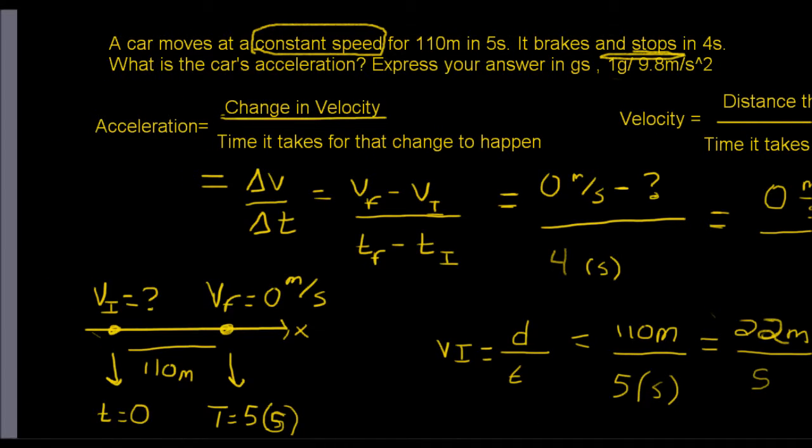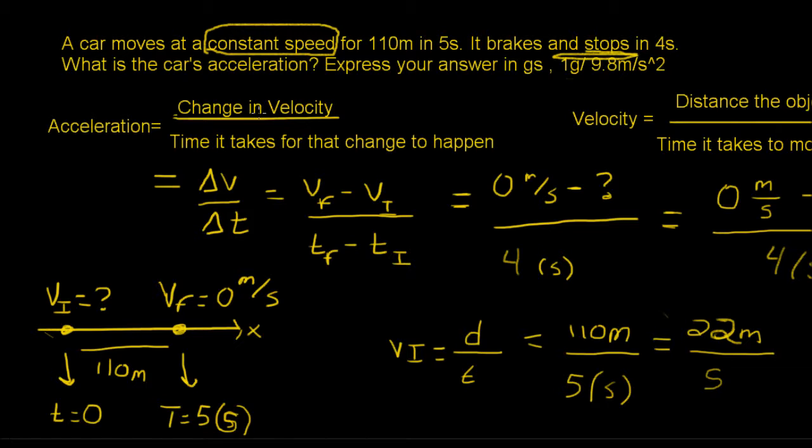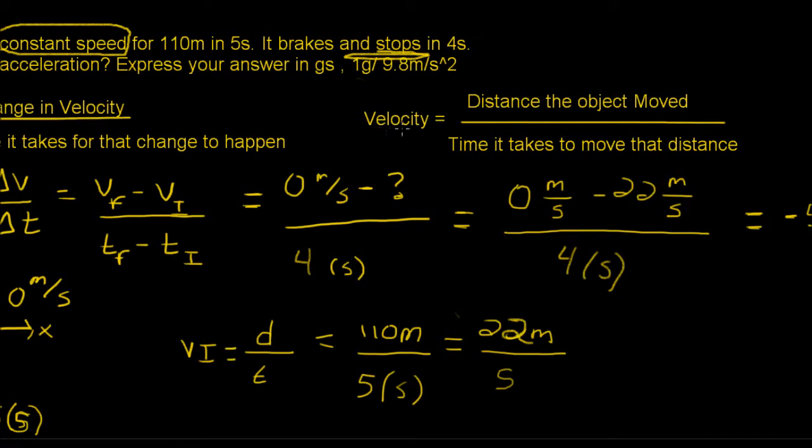So let's start off by drawing a graph, which is right here. So here we have its constant speed, which was the initial velocity. And at the initial velocity, it moved 110 meters in 5 seconds. So how do we solve for velocity? Well, let's look at the definition. Velocity is the distance an object moved over the time it takes to move that distance, pretty similar to acceleration.